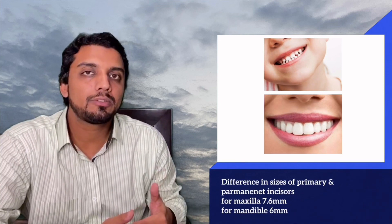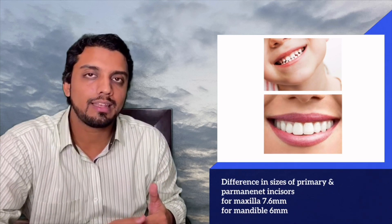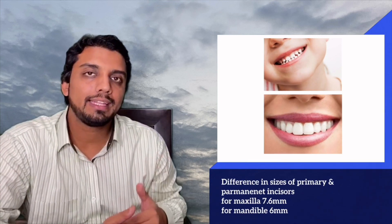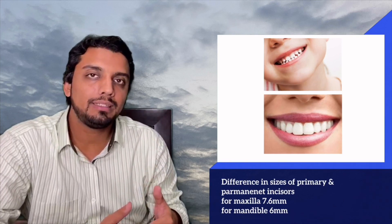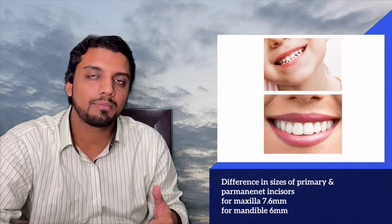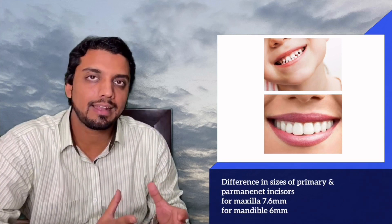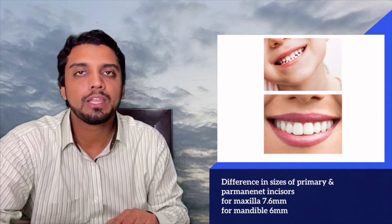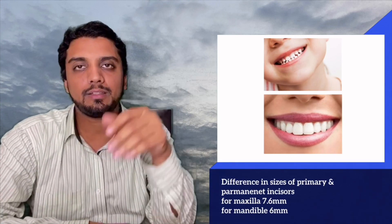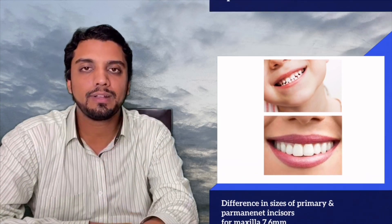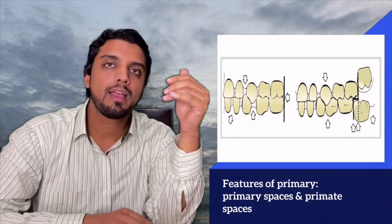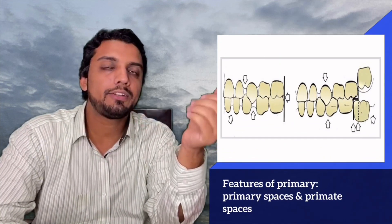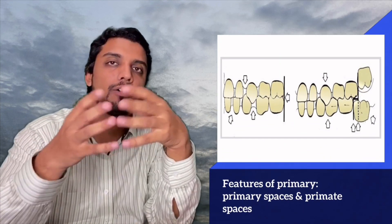In the mandible, the incisor liability is relatively smaller compared to the maxilla, because the permanent incisors in the mandible are relatively small compared to the maxilla. So incisor liability is basically the difference in the sizes of the permanent incisors and the primary incisors.